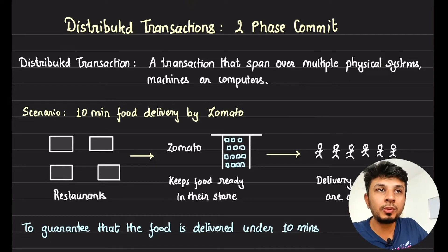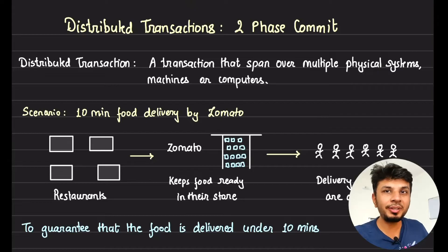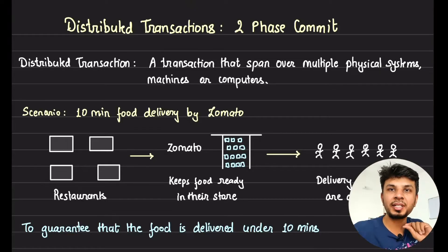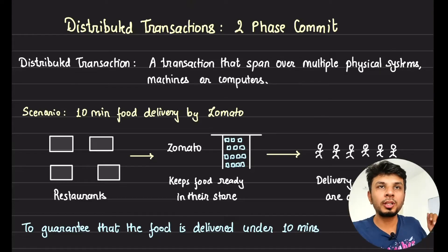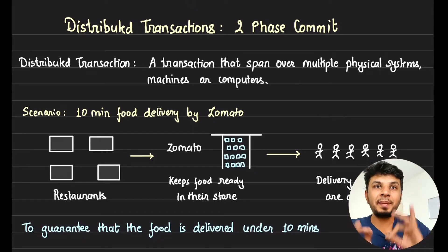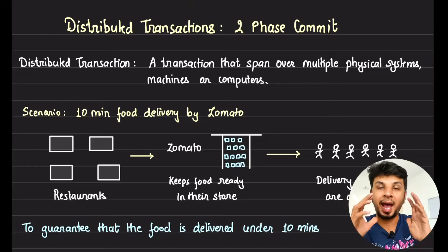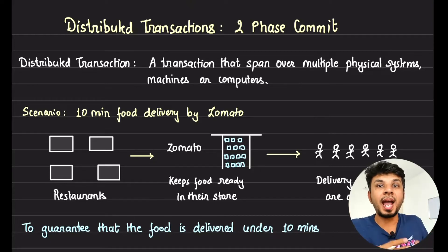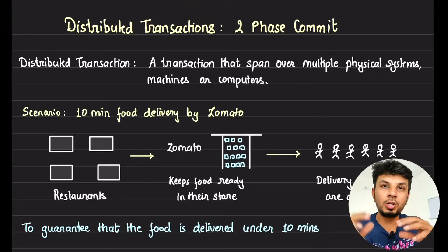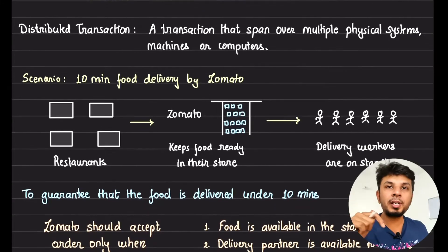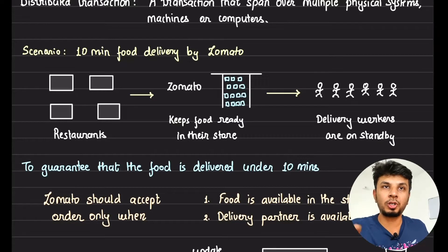Distributed transactions have to be one of the most intimidating things out there — either you take it for granted because your database guarantees it out of the box, or you just know it theoretically. In this two-part video series, I want to walk you through the concept of distributed transactions and implement it using the two-phase commit protocol. We'll take an example of Zomato's 10-minute food delivery to understand the overall algorithm and protocol to guarantee atomicity spanning microservices.